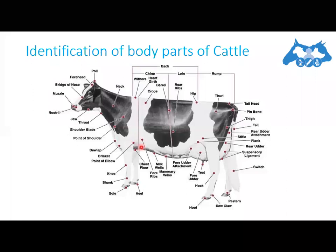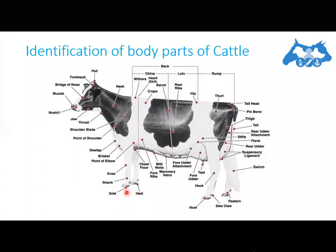In the leg portion, focusing on the different body parts from the ground upward: the first part touching the ground is the sole of the feet, at the back side is the heel, the upper portion from the sole is the shank, and then comes the knee joint.